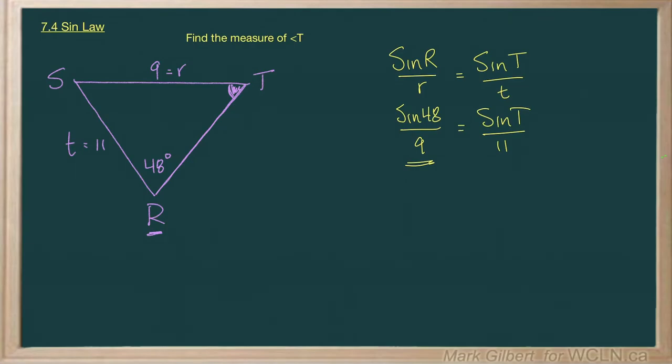So if I do the sine of 48 divided by 9, I get 0.08257 equal to the sine of T over 11. I'd do that first. You'll probably make less errors.